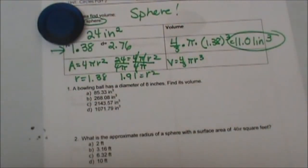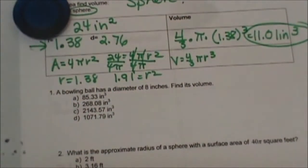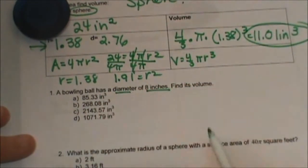A bowling ball has a diameter of 8 inches, find its volume. This one is pretty easy, it's giving us a diameter or a linear measurement.